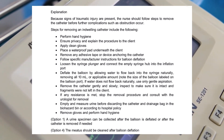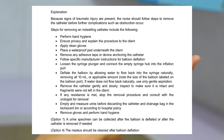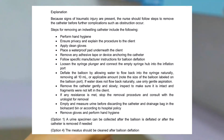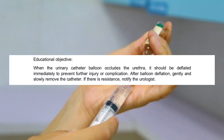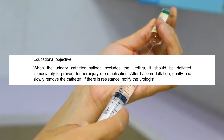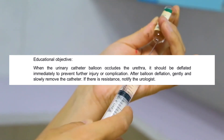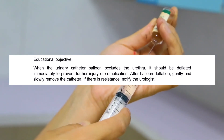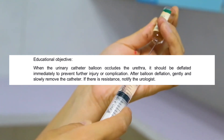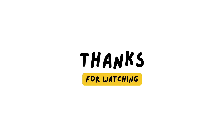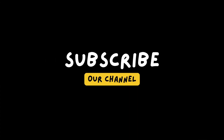Option 1: A urine specimen can be collected after the balloon is deflated or after the catheter is removed if needed. Option 4: The meatus should be cleaned after balloon deflation. Educational objective: When the urinary catheter balloon occludes the urethra, it should be deflated immediately to prevent further injury or complication. After balloon deflation, gently and slowly remove the catheter. If there is resistance, notify the urologist.